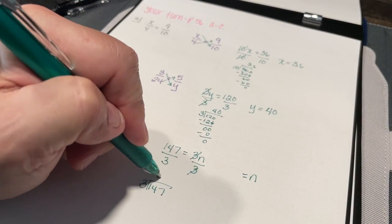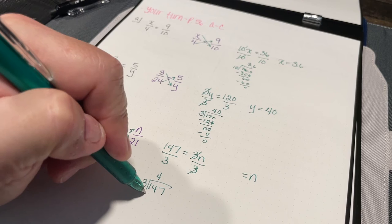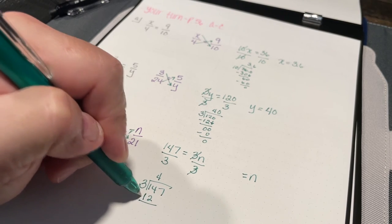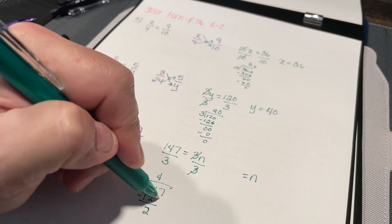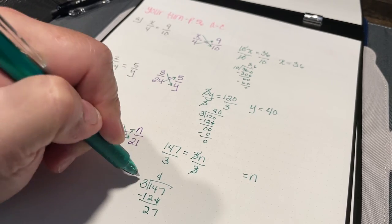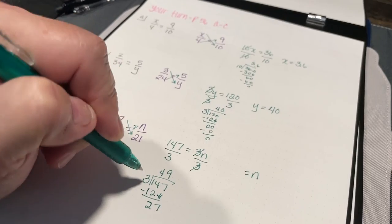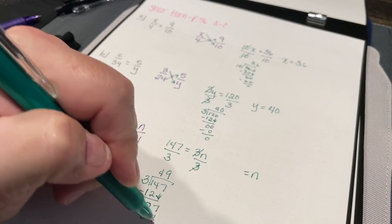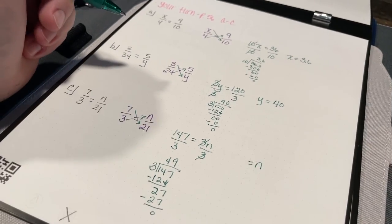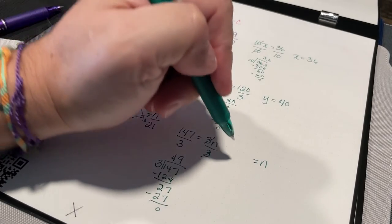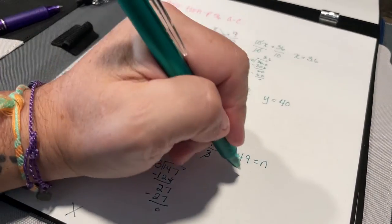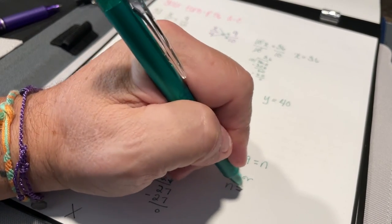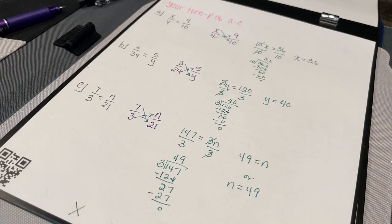So now I've got to figure out how many times does 3 go into 147? 3 goes into 14 four times. 4 times 3 is 12. 14 minus 12 is 2. Bring down a 7. 3 goes into 27 nine times. 9 times 3 is 27. I'm left with nothing. So now I have 49 equals n, or I could just say n equals 49. Both of them are correct.